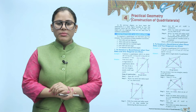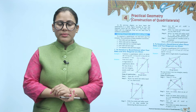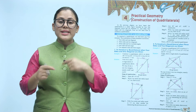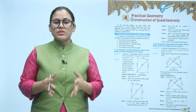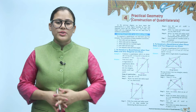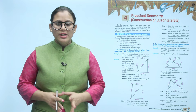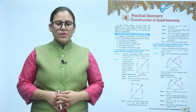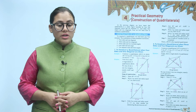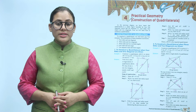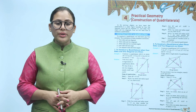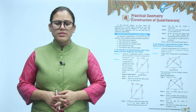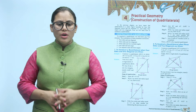In the last chapter we learned about quadrilaterals, and now we will learn how to construct one. To construct a quadrilateral we must have any five elements. The combination of these elements is as follows.